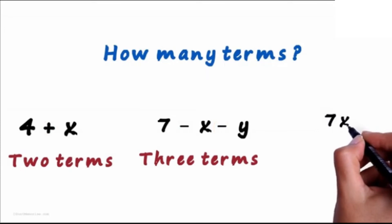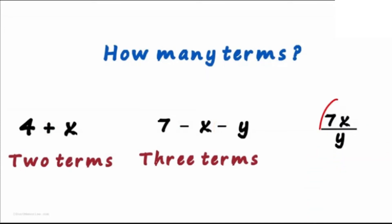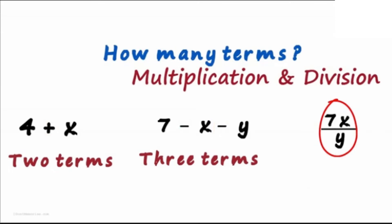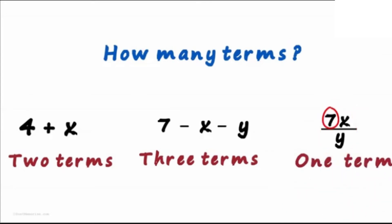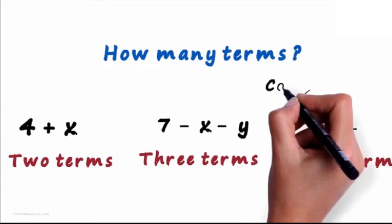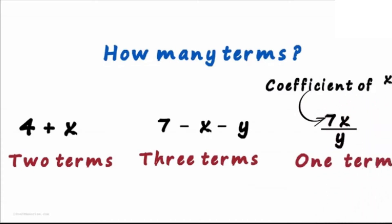What about 7x divided by y? This expression involves multiplication and division. And as we know, they do not separate the terms. This is just one term. What is 7 in this case? It's called the coefficient of x by y.